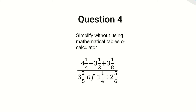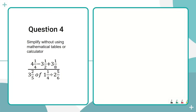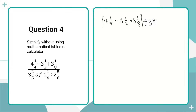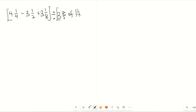Let's look at how we can solve this question. We write the expression with four whole number one over four minus three whole number one over two plus three whole number one over eight, putting this in brackets. Then we bring the division sign, divided by three whole number two over five of one whole number one over four divided by two whole number five over six.